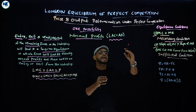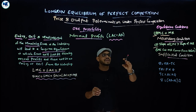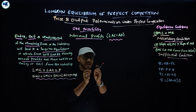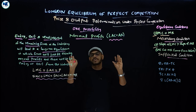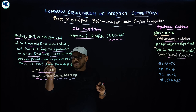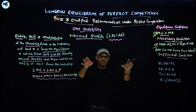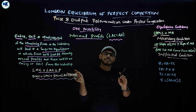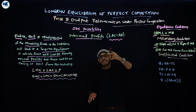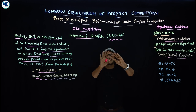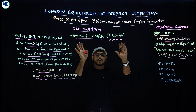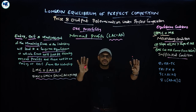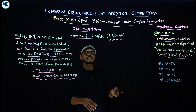A group of firms is simply called an industry. In the long-run equilibrium under perfect competition, each and every firm earns only normal profit — no excess profit, no losses — and there will be no further entry or exit from the industry. The stable equilibrium is achieved with maximum utilization of the available resources.